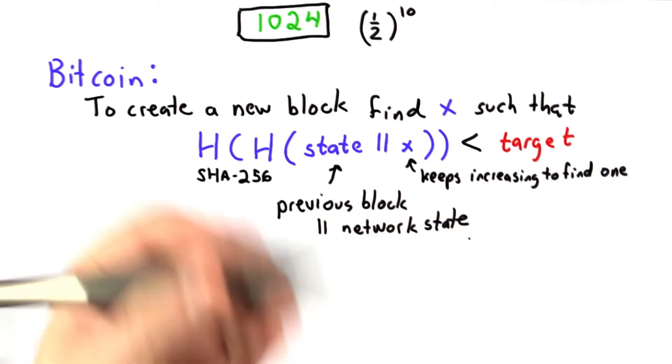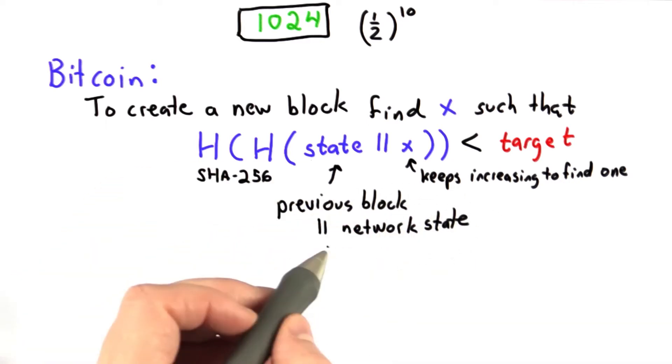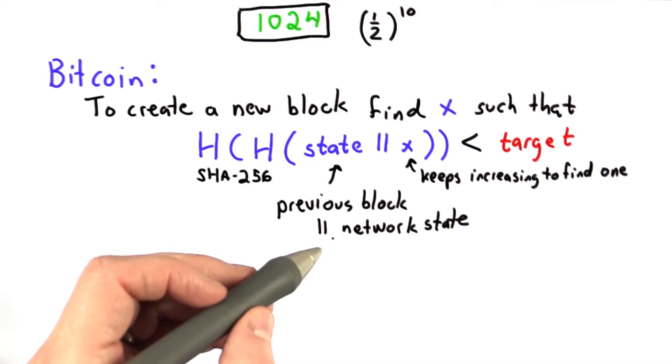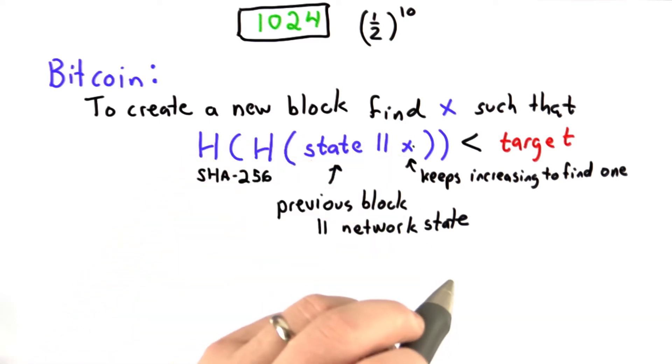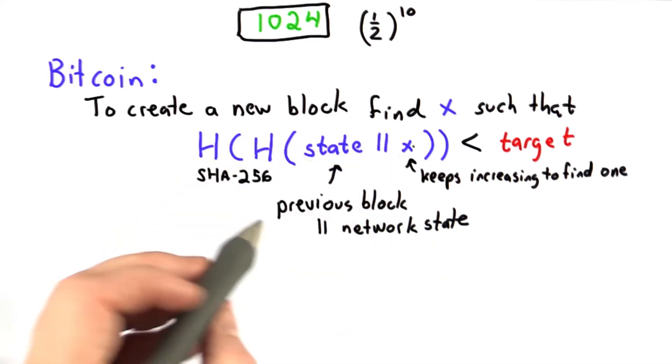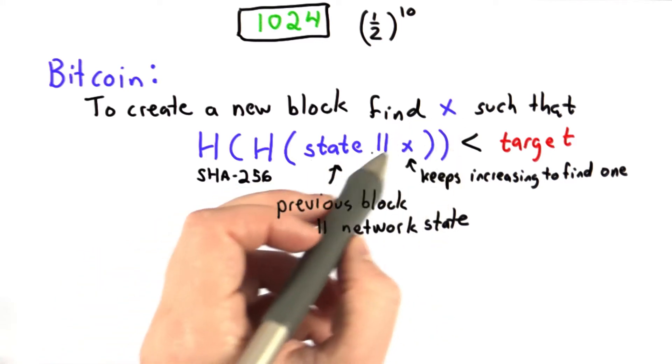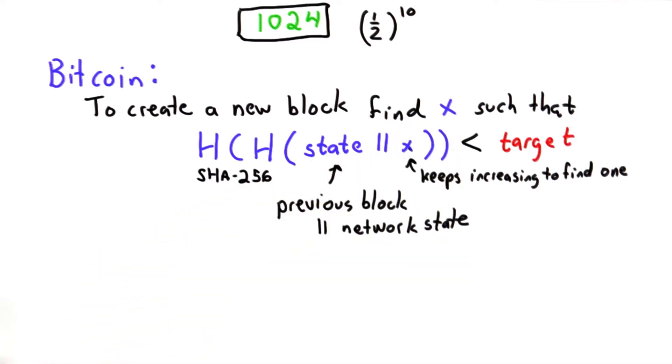It also includes some information that's likely to be unique for each member of the network. This is how they avoid it being the case that they're all racing to find the same value x. So given those properties, then the goal is to find the value x that you can concatenate with that to be less than some target.